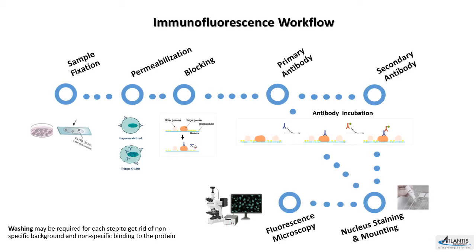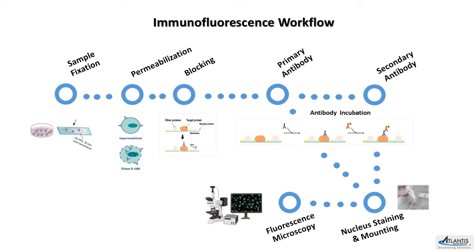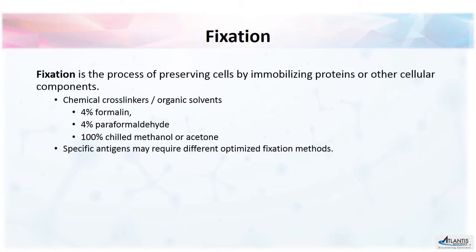Here is the immunofluorescence workflow. The first step is sample fixation. This step is the process of preserving cells by immobilizing proteins or other cellular components, and it can be done by using chemical crosslinkers or organic solvents.